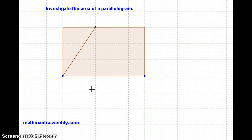Now, we already know that the area of a rectangle is base times height. By height, we mean, of course, the perpendicular distance between the parallel sides of the rectangle.